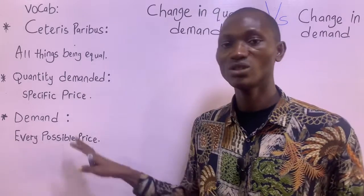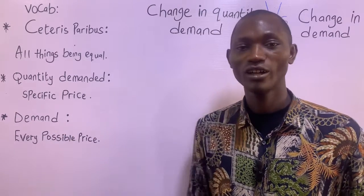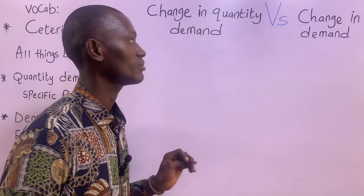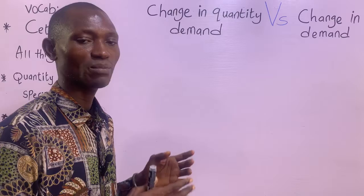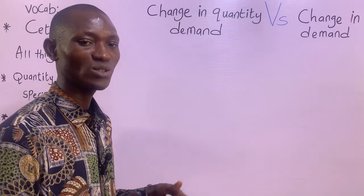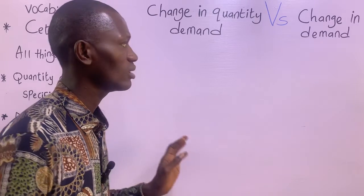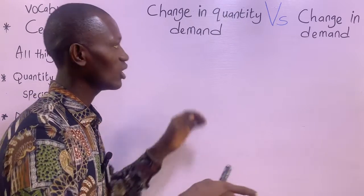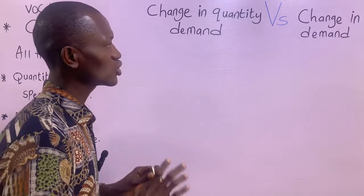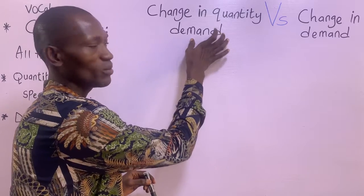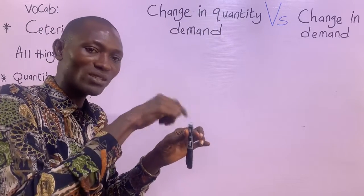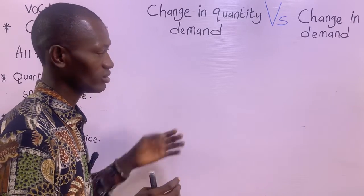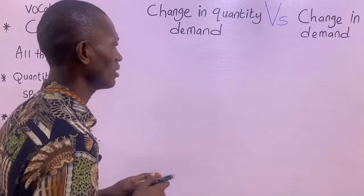So that's the key terminology for today. I hope that further deepens your understanding. So let's talk about change in quantity demanded. Ceteris Paribus — the concept of change in quantity demanded explains the movements along the demand curve due to change in the price of the commodity in question. The primary factor responsible for changing quantity demanded is the change in the price of the commodity in question. And we are going to be illustrating that on the board — that's the graphical illustration.